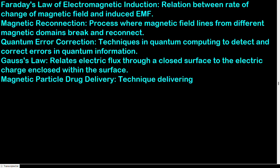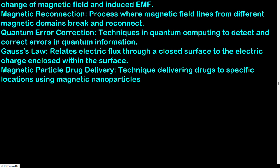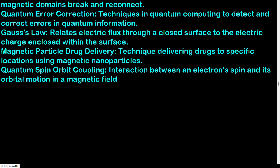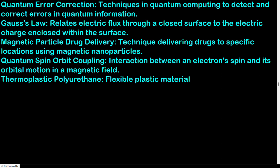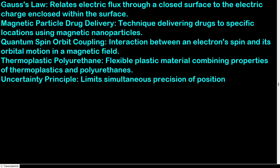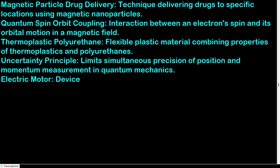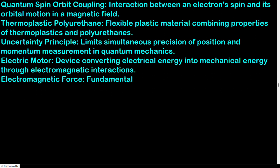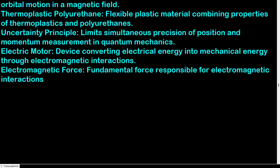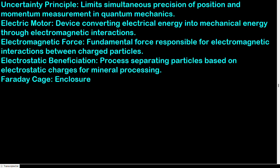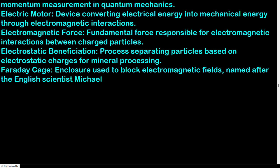Magnetic particle drug delivery: technique delivering drugs to specific locations using magnetic nanoparticles. Quantum spin-orbit coupling: interaction between an electron spin and its orbital motion in a magnetic field. Thermoplastic polyurethane: flexible plastic material combining properties of thermoplastics and polyurethanes. Uncertainty principle: limits simultaneous precision of position and momentum measurement in quantum mechanics. Electric motor: device converting electrical energy into mechanical energy through electromagnetic interactions. Electromagnetic force: fundamental force responsible for electromagnetic interactions between charged particles. Electrostatic beneficiation: process separating particles based on electrostatic charges for mineral processing. Faraday cage: enclosure used to block electromagnetic fields, named after scientist Michael Faraday.